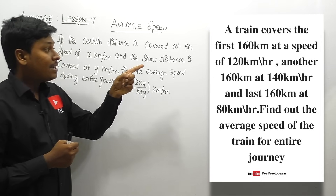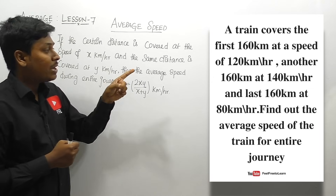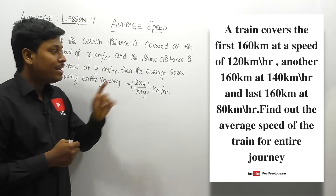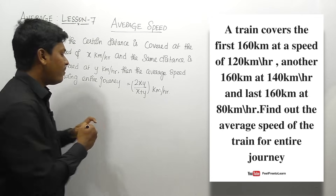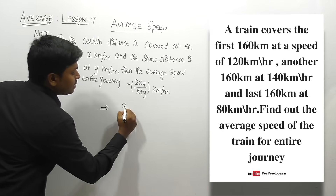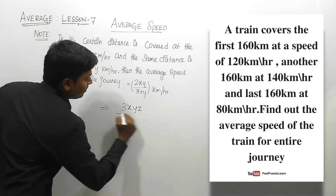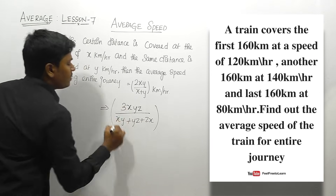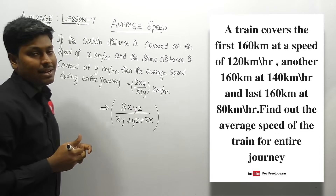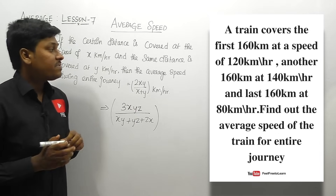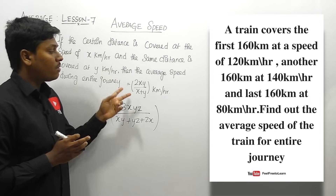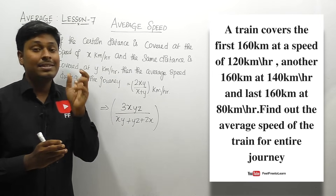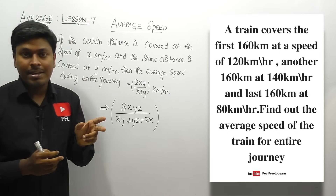The formula 2xy/(x+y) applies only when there are two speeds. Since there are three speeds — 120, 140, and 80 kilometers per hour — we extend the formula to 3xyz divided by (xy + yz + zx). Apply all the values into this formula and you will get the average speed for the entire journey.